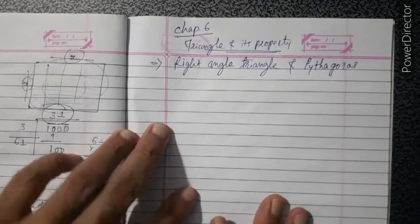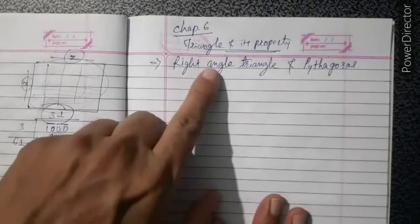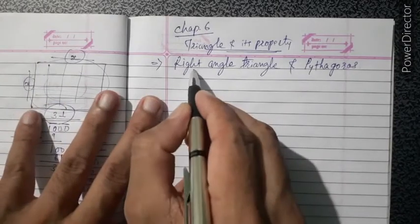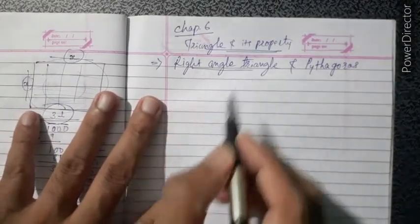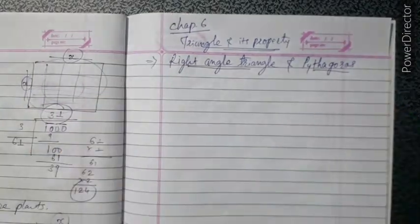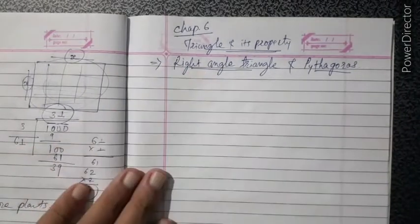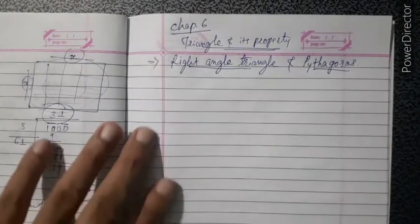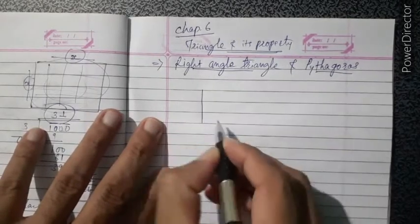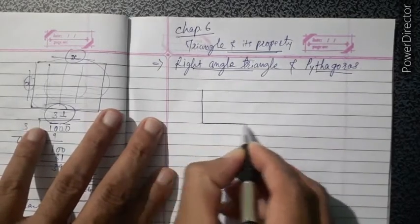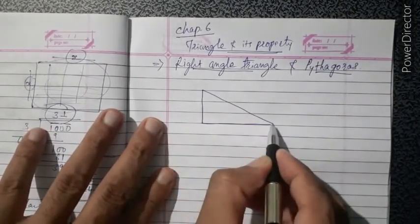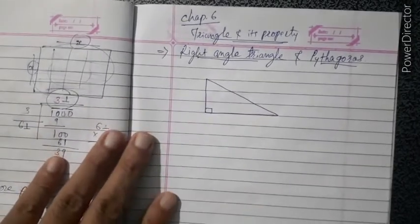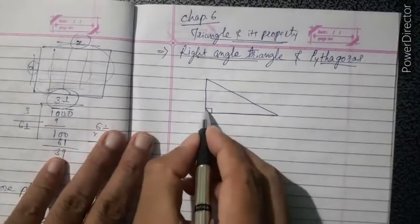Hello students. Chapter 10.6: Triangle and its Properties. Today we learn about right angle triangle and Pythagoras property. A right angle triangle is a triangle in which the measurement of any one angle is 90 degrees, meaning one angle is a right angle.